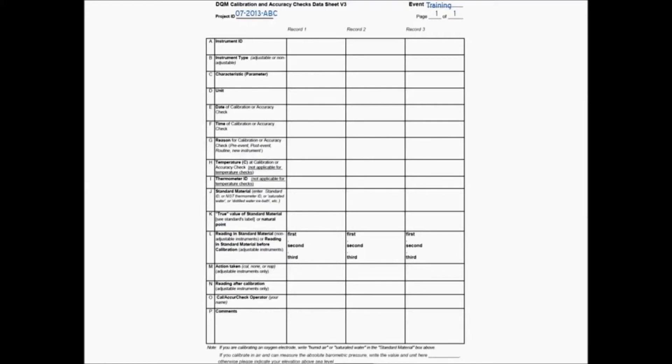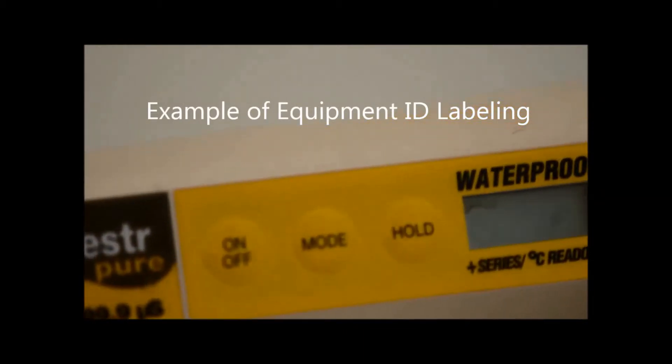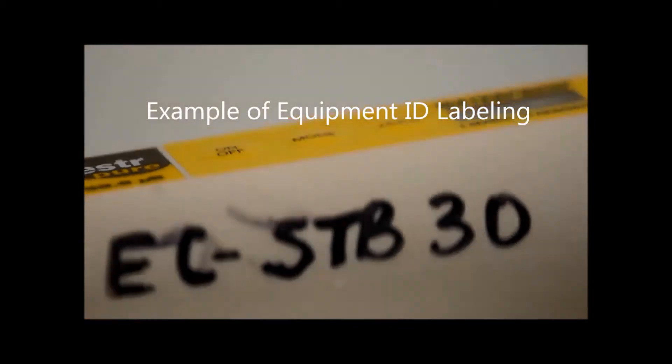Enter the instrument ID. For example, TDS CWT 011. This refers to a TDS meter owned by the Clean Water Team, and it's the 11th one that we've purchased.